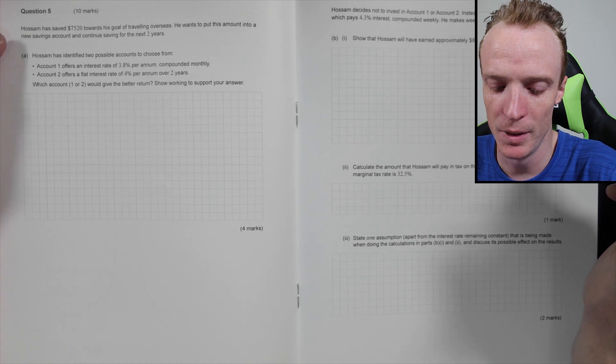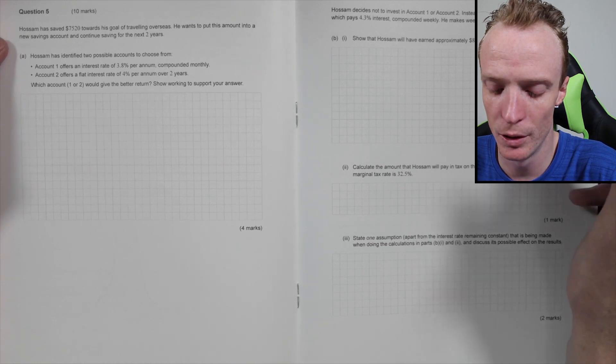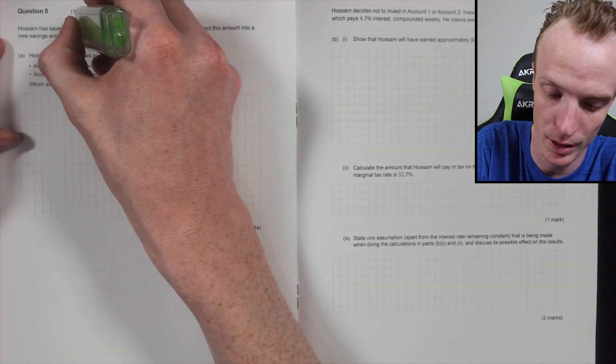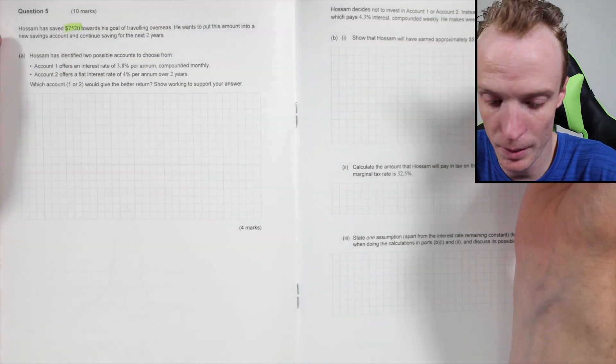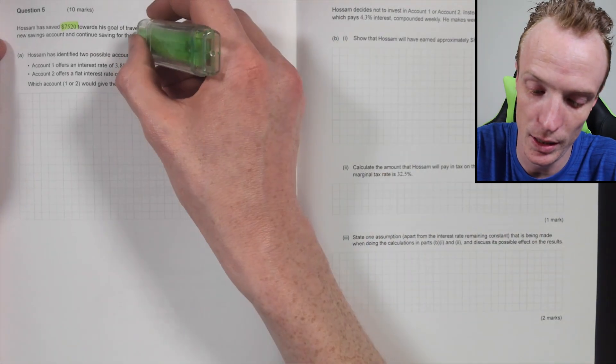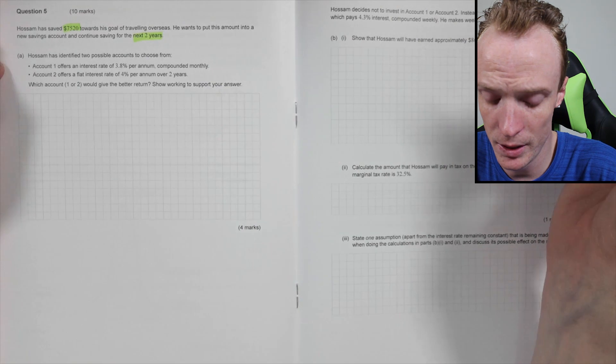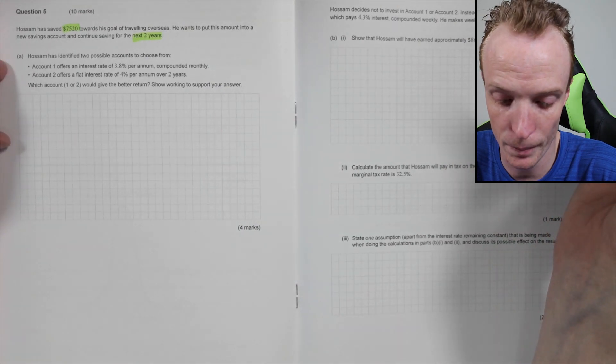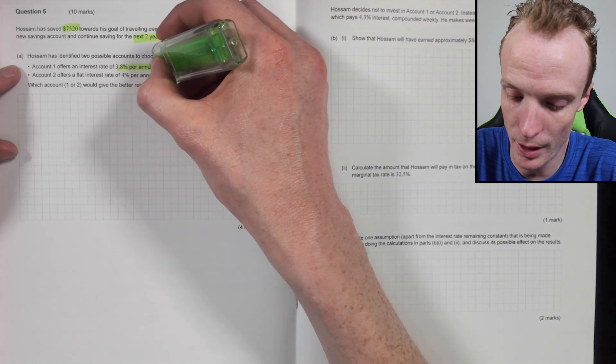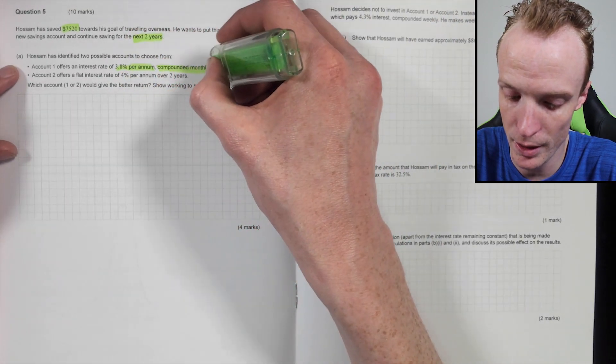So question five. Hossam has saved $7,520 towards his goal of traveling overseas. Let's just say he saved that. He wants to put this amount into a new savings account and continue saving over the next two years. Hossam has identified two possible accounts to choose from. Account one offers an interest rate of 3.8% per annum, compounded monthly.